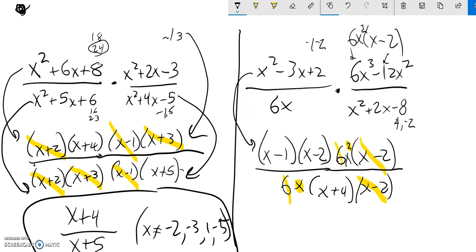So if I write this solution out, it's going to be x times x minus 1 times x minus 2. That whole thing's over x plus 4.